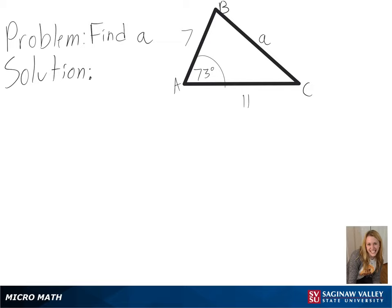Our problem is to find a. Looking at our triangle, we can see the values we know are two side lengths and the included angle. So to find the missing side length, we will be using the law of cosines.